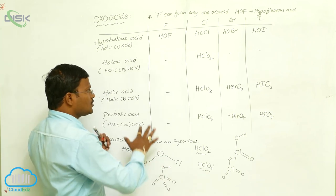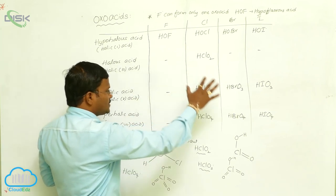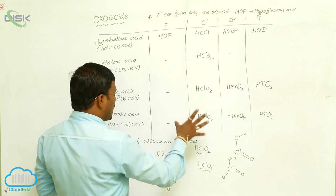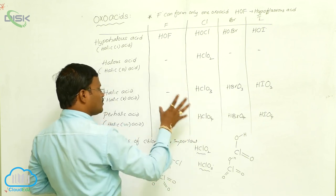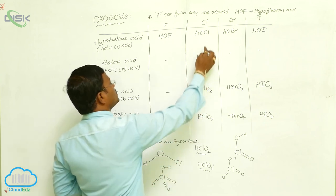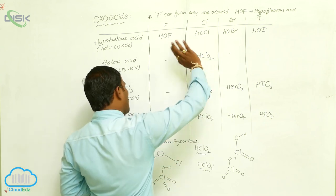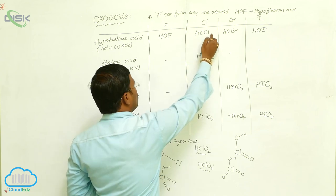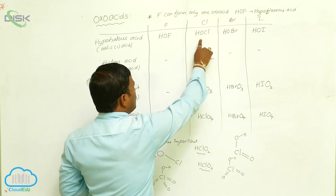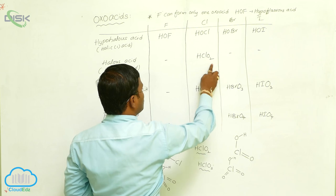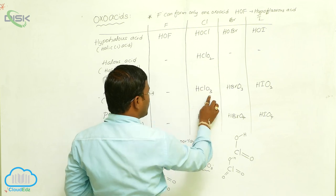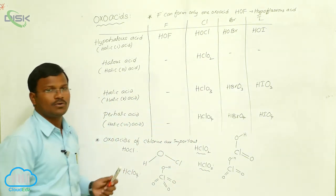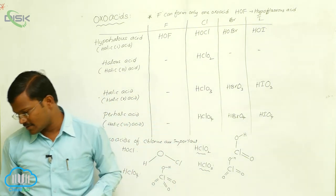These are the oxoacids resulting from halogens. Among all halogen oxoacids, the oxoacids of chlorine — hypochlorous acid, chlorous acid, chloric acid, and perchloric acid — are the most important and relatively more stable.